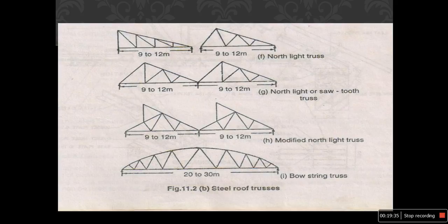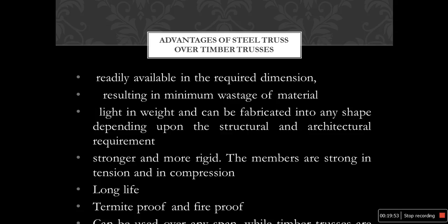Other types of steel roof structures for 9 to 12 meter spans include north light truss, north light or sawtooth truss, modified north light truss, and bowstring truss. The advantages of steel trusses over timber trusses are: readily available in required dimensions, minimum wastage of material, lightweight, stronger, more durable and rigid, longer life, termite-proof and fireproof compared to timber trusses, and can be used for any span.